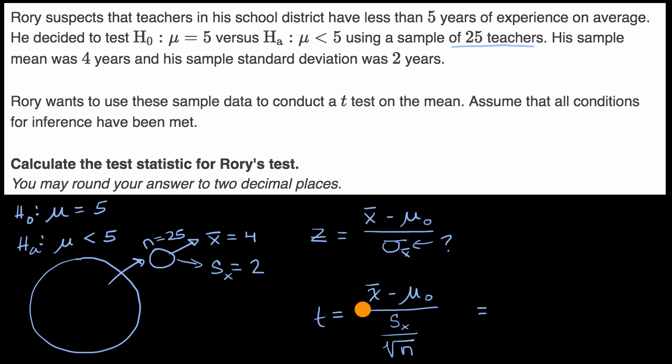Well, this is going to be equal to, our sample mean is four, minus our assumed mean is five, our assumed population mean is five, our sample standard deviation is two, all of that over the square root of the sample size, over the square root of 25. So this is going to be equal, our numerator is negative one. So it's negative one divided by two over five, which is equal to negative one times five over two. And so this is equal to negative five over two, or negative 2.5.